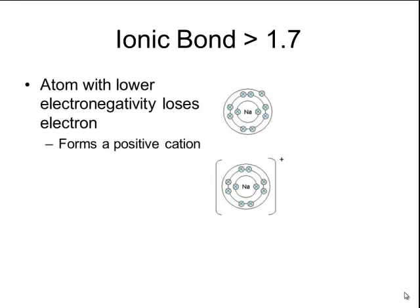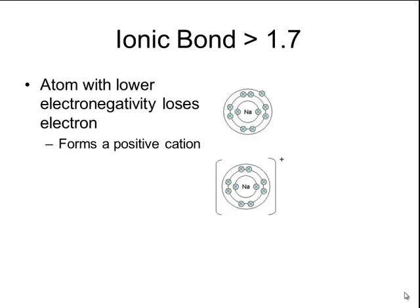When an ionic bond forms, the atom with the lower electronegativity will lose electrons, and that forms a positive cation. For example, sodium has one valence electron in its outermost shell that it will lose in order to become stable like its nearest noble gas. When it loses that one electron, it will end up with a charge of positive 1.